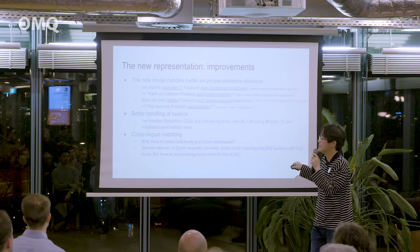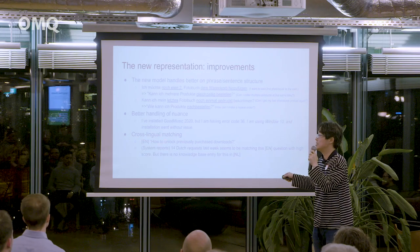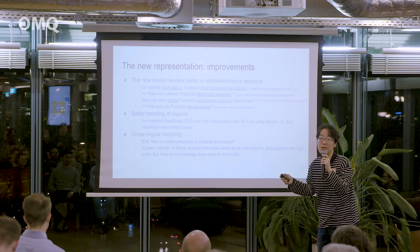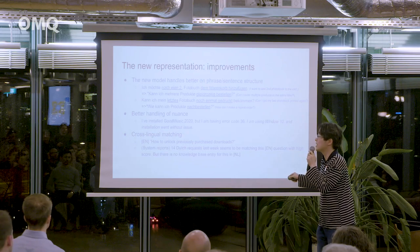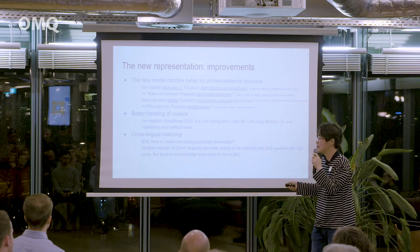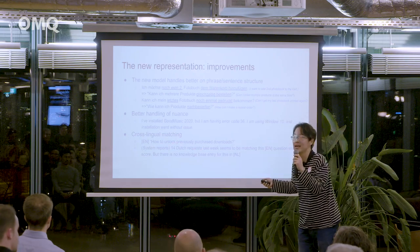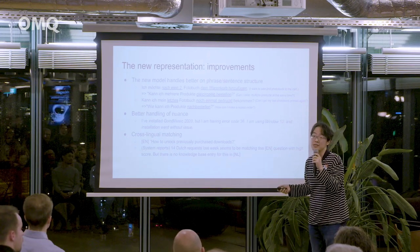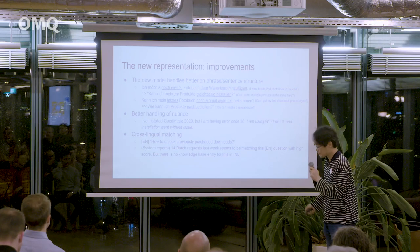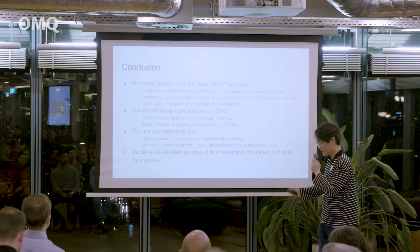Cross-lingual matching is another interesting improvement. For example, 'how to unlock previously purchased downloads' is a commonly asked question in English. For some knowledge bases, there may be large numbers of English and German cases but not Dutch. The system can now report that over the last week there were Dutch requests very likely to match this topic but we couldn't serve them — so we can improve by adding a Dutch knowledge base entry. This kind of cross-lingual comparison was not possible before but is now enabled by multilingual models. That's why we are now rolling out our models into more products.